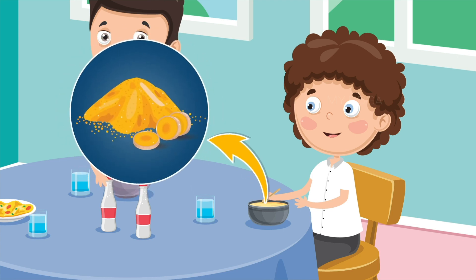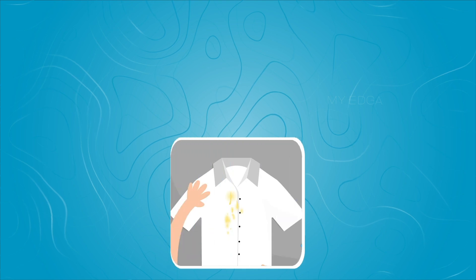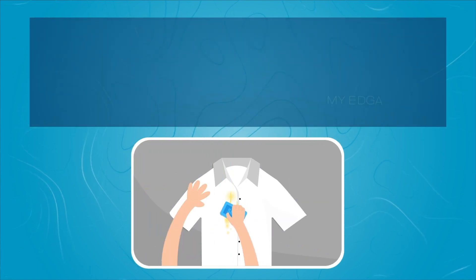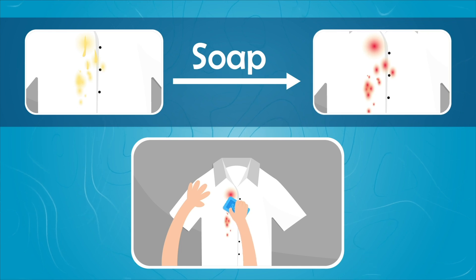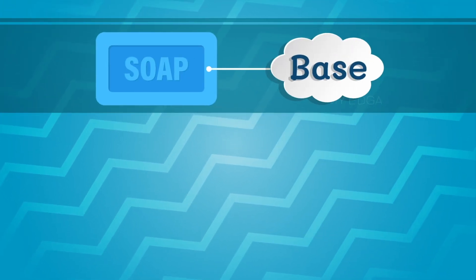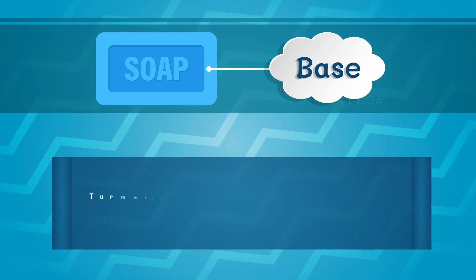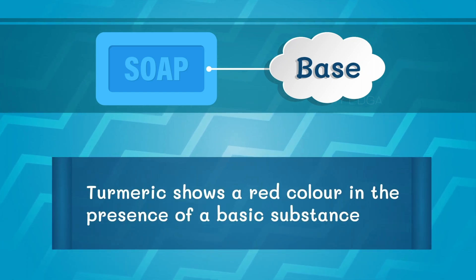How did the color of the yellow stain change into red? Yes, the curry he was eating contained turmeric. When he applied soap to it, the color of turmeric changed from yellow to red. As you know, soap is a base, so turmeric shows a red color in the presence of a basic substance.